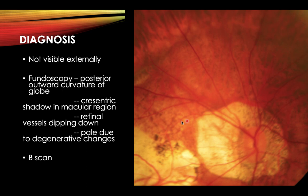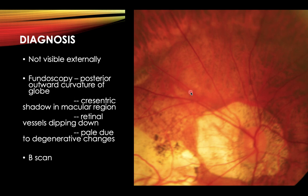On fundoscopy, we see the posterior outward curvature of the globe — there is a visible dip indicating the staphyloma. A crescent-shaped shadow in the macular region may be present, and the retinal vessels are seen dipping down. The area of the staphyloma appears pale due to degenerative changes as the stretched choroid becomes exposed. B-scan can be used for confirmatory diagnosis.